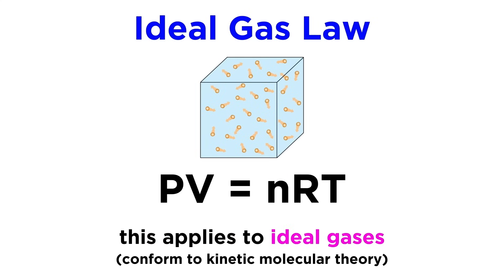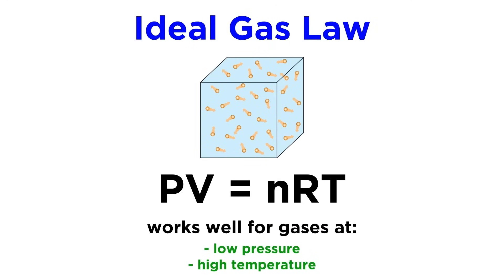Gases that show this relationship between these variables are ideal gases, which are gases that fit the assumptions of kinetic molecular theory, and this equation works quite well for gases at relatively low pressure and relatively high temperature.